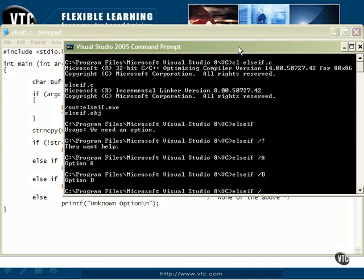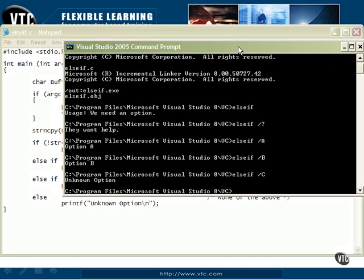And if we put something else in there, like a C we didn't program or didn't handle an option C, that's an unknown option. So all of our test scenarios work.